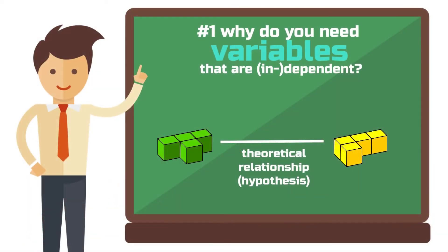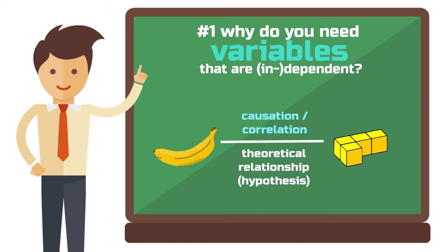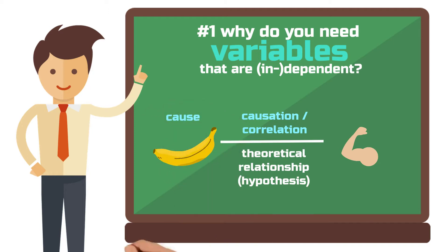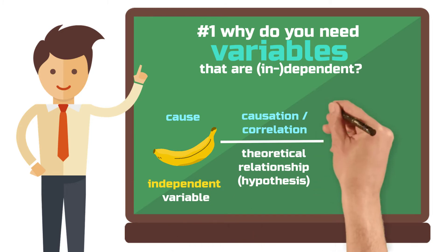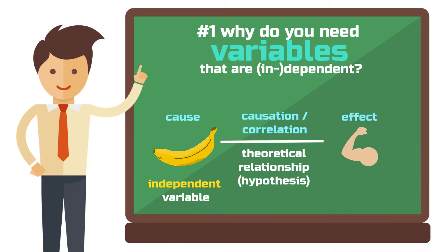A hypothesis typically includes two variables and their relationship to each other — it's about how one variable affects the other. The hypothesis expresses a relationship between cause and effect. For example: eating a banana immediately after exercise increases muscle regeneration. In this hypothesis, eating a banana is the cause — this is the independent variable. Increased muscle regeneration is the expected effect — this is the dependent variable.